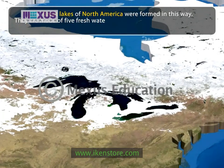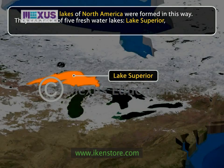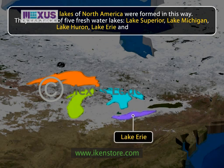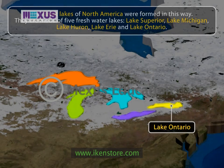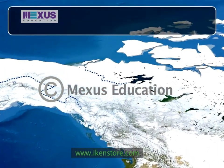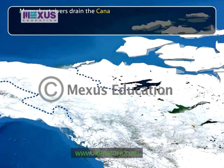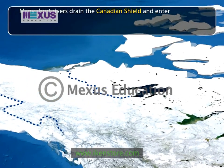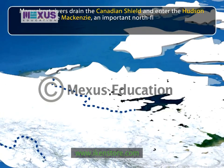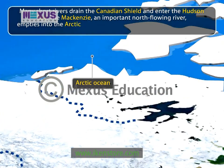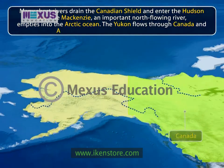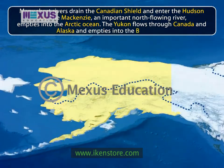The Great Lakes are made of five freshwater lakes: Lake Superior, Lake Michigan, Lake Huron, Lake Erie, and Lake Ontario. Many short rivers drain the Canadian Shield and enter the Hudson Bay. The Mackenzie, an important north-flowing river, empties into the Arctic Ocean. The Yukon flows through Canada and Alaska and empties into the Bering Sea.